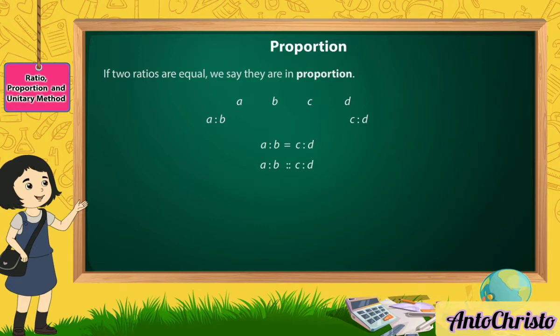Here A and D are called extreme terms and B and C are called mean terms. The number D is also known as the fourth proportional to A, B and C.